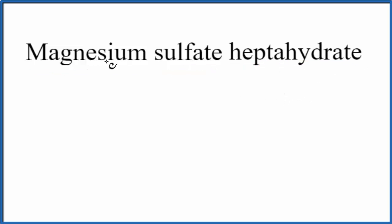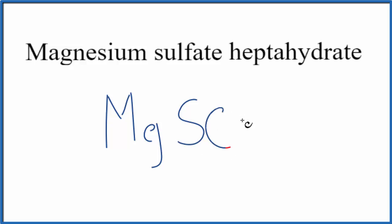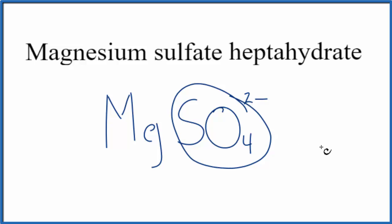For magnesium sulfate, magnesium — if we look this up on the periodic table — that's Mg. And then sulfate: when you see '-ate,' it's not going to be on the periodic table. You either memorize that sulfate is SO4, or if you allow it, you can look it up on a table. So sulfate is SO4, and that has a 2- charge on the whole SO4.